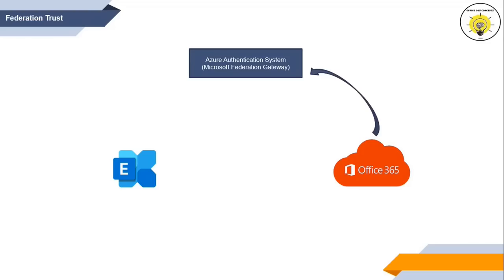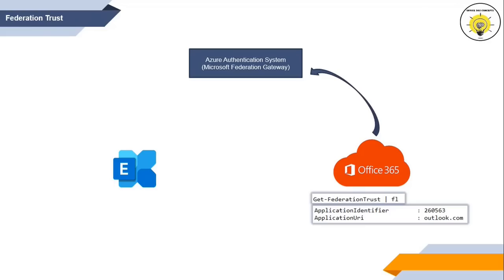Microsoft Federation Gateway is now called Azure Authentication System. Azure Authentication System is a cloud-based service that works as a mediator between two organizations. When this Federation Trust is created, Azure Authentication System assigns certain values for it. You can check these values by running Get-FederationTrust | fl in Exchange Online PowerShell. For every Office 365 tenant, you will see the value 260563 in the Application Identifier attribute, and the Application URI will have the value outlook.com.